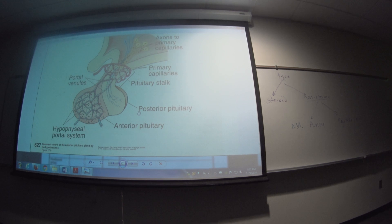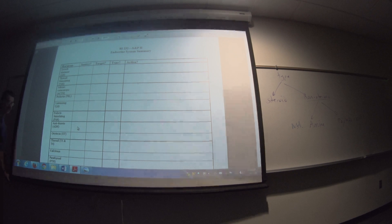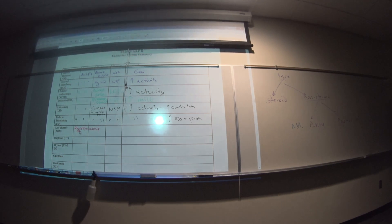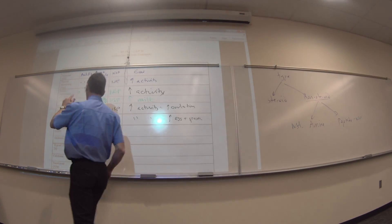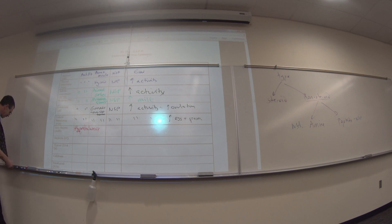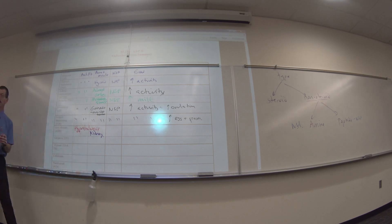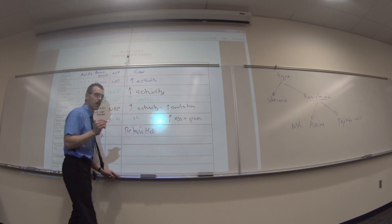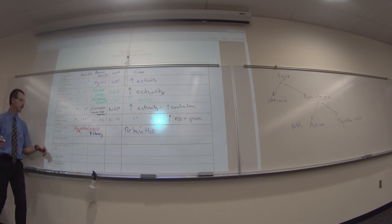So on your data table, you're going to write hypothalamus because that's where it's made. That's the source, not the releasing structure. Where does it go? The target of anti-diuretic is the kidney. Because what is the action? What does anti-diuretic tell you it does? Stop peeing. Retain water. You pee water out your kidneys. Therefore, you're going to anti-stop peeing, which means retaining water. And this is an NSP.